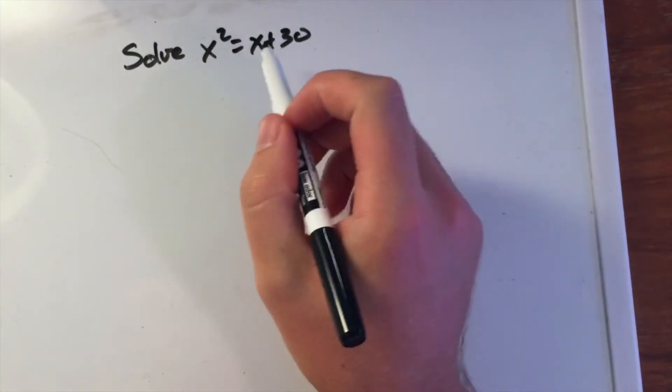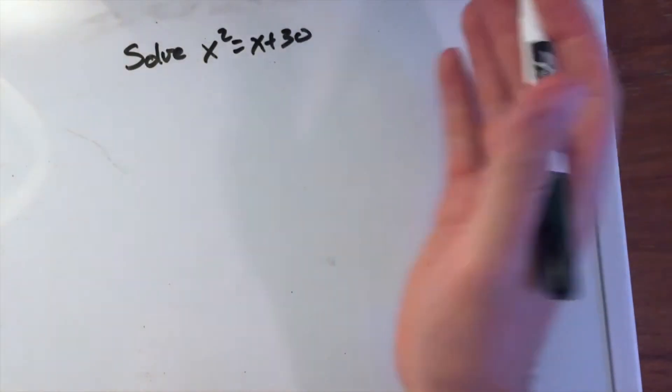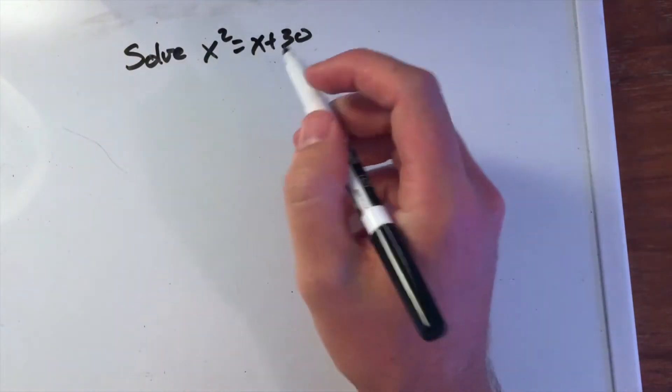First, we want to get all the parts to one side and set it equal to zero. That's the goal.